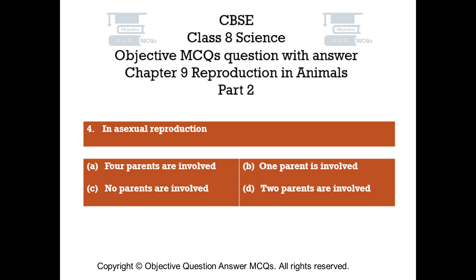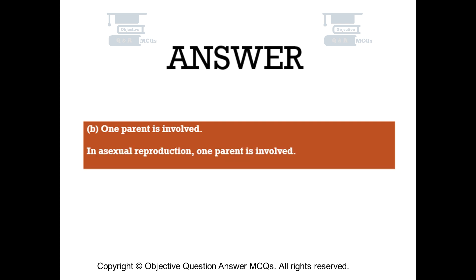Question number 4. In asexual reproduction. Option A: Four parents are involved. Option B: One parent is involved. Option C: No parents are involved. Option D: Two parents are involved. The right answer is Option B: One parent is involved. In asexual reproduction, one parent is involved.